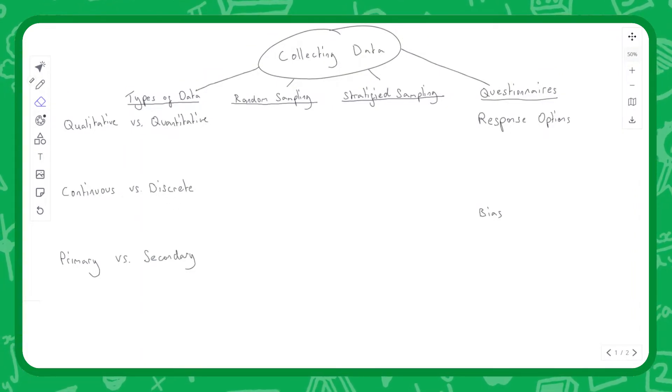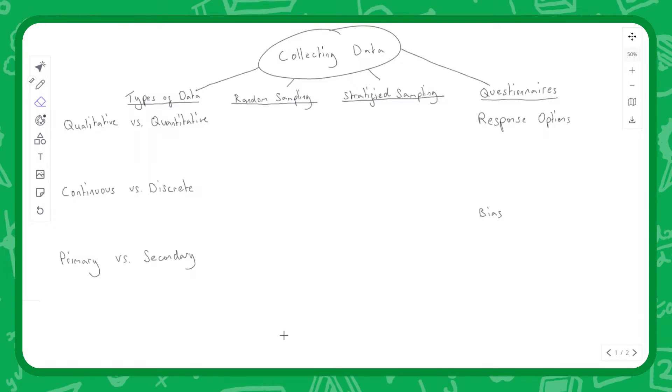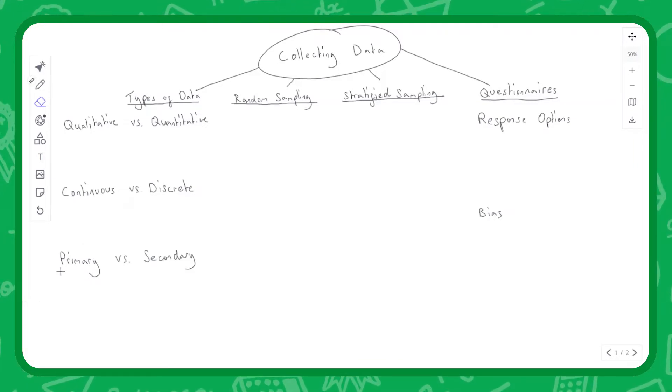Now looking at primary versus secondary data. Primary data is data that we collect ourselves. We could go out into the field and survey people, or go over to the bridge and count the cars driving under it.